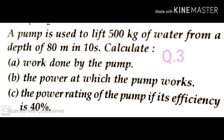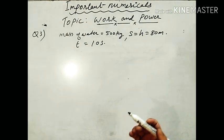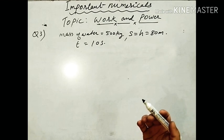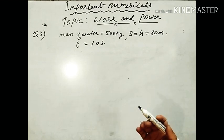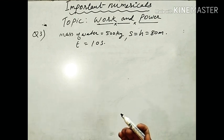Question three: a pump is used to lift 500 kilogram of water from a depth of 80 meter in 10 seconds. Calculate: first, the work done by the pump; second, the power at which the pump works; third, the power rating of the pump if its efficiency is 40%. Solving numericals in physics is just like cooking — you need the right ingredients in the right proportions.